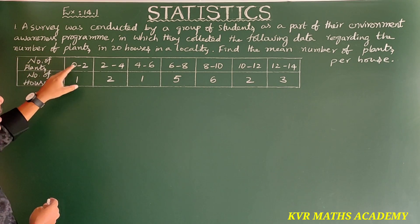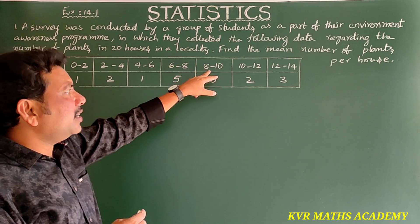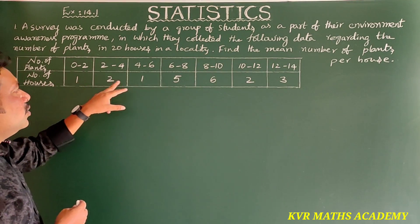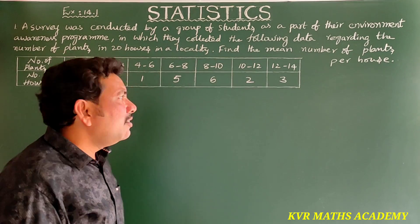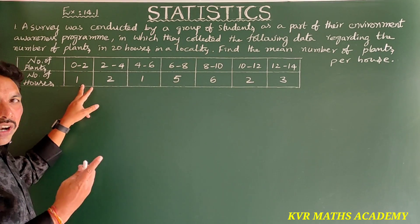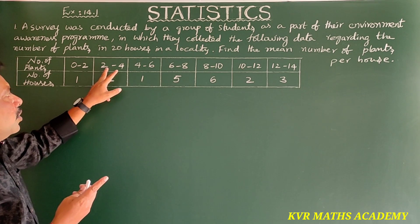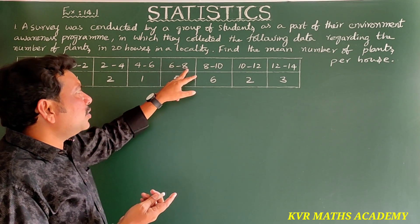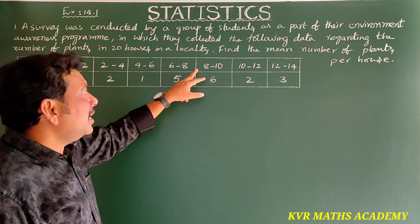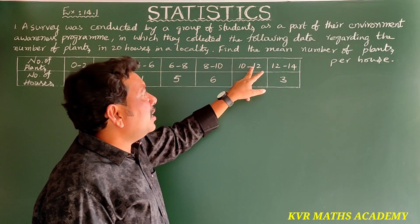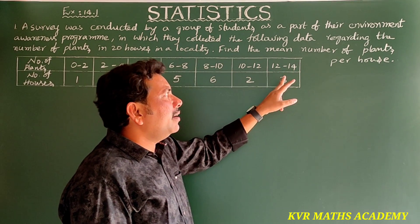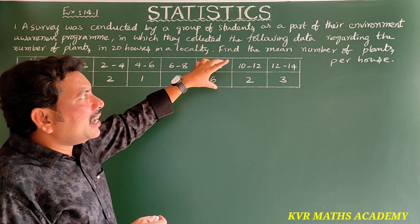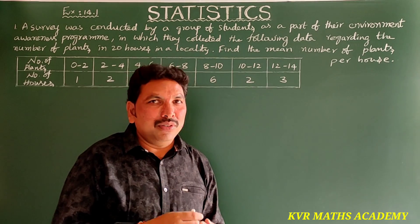The number of plants intervals are: 0–2, 2–4, 4–6, 6–8, 8–10, 10–12, and 12–14. The corresponding number of houses are 1, 2, 1, 5, 6, 2, and 3. So 0–2 plants in 1 house, 2–4 plants in 2 houses, 4–6 in 1 house, 6–8 in 5 houses, 8–10 in 6 houses, 10–12 in 2 houses, and 12–14 in 3 houses.